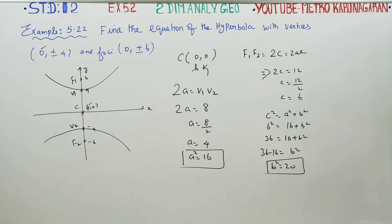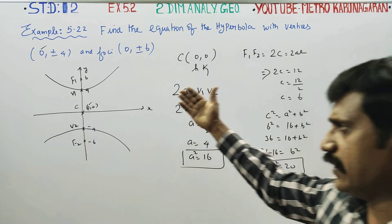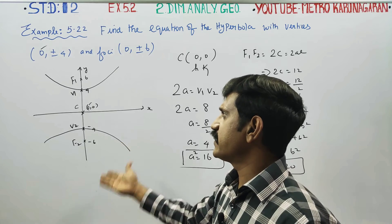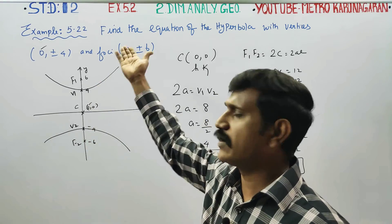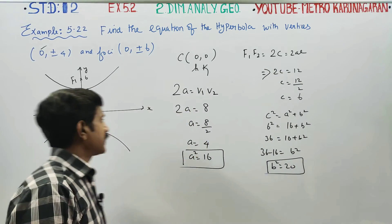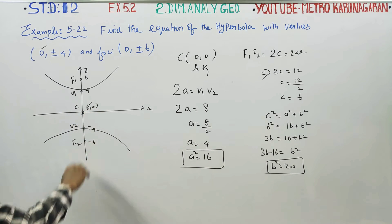Now, center is H, K. A square is ready. B square is also ready. You can see hyperbola is vertical. It is along y-axis. The center is (0,0) origin.